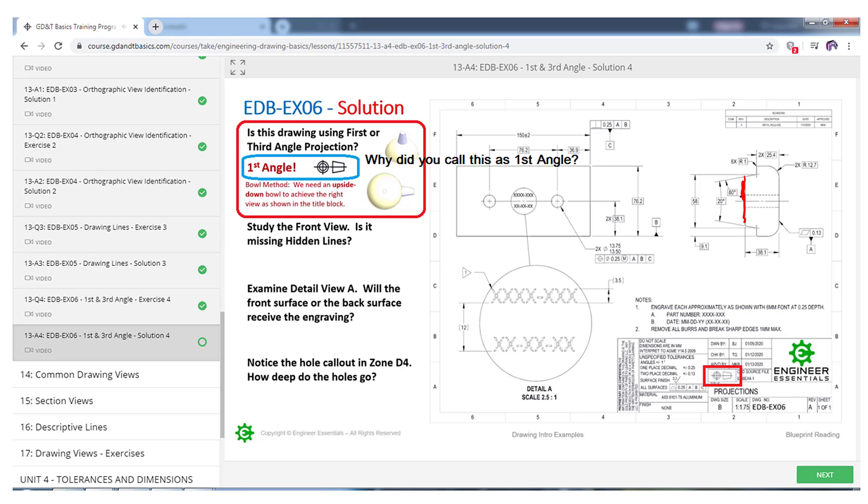Especially companies in Germany, over in Europe, where they are using first angle projection. Really got to pay close attention to this. And the next slide here, we're going to take a look at the salad bowl method projection which really helps to clear things up.